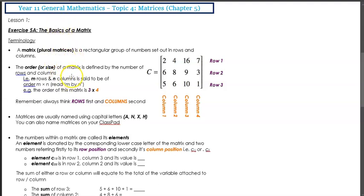And what a matrix is, in a nutshell, is a rectangular group of numbers set out in rows and columns. It does not matter what numbers are within that matrix, how many rows have been set out and how many columns have been set out, it still will be considered a matrix.